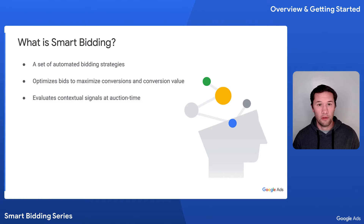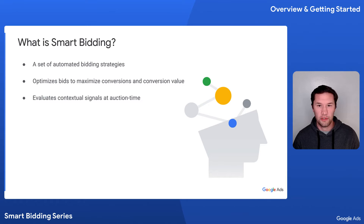Smart Bidding also evaluates a wide range of contextual signals available at auction time, like a user's device, location, browser, and more, and can also recognize and adjust for meaningful interactions between billions of combinations of signals that can impact your conversion rates. If you'd like to learn more about bidding in general, take a look at our bidding guide — I've included a link in the description of this video.